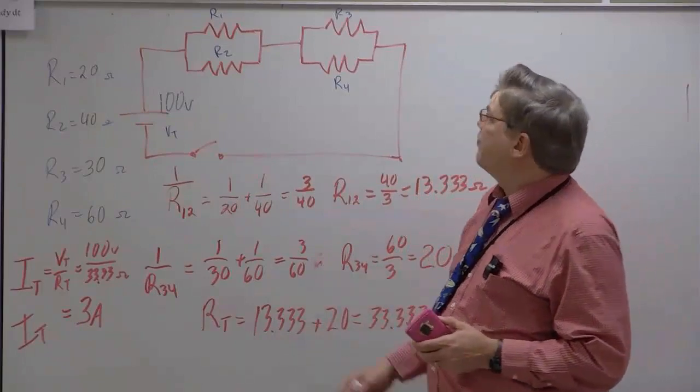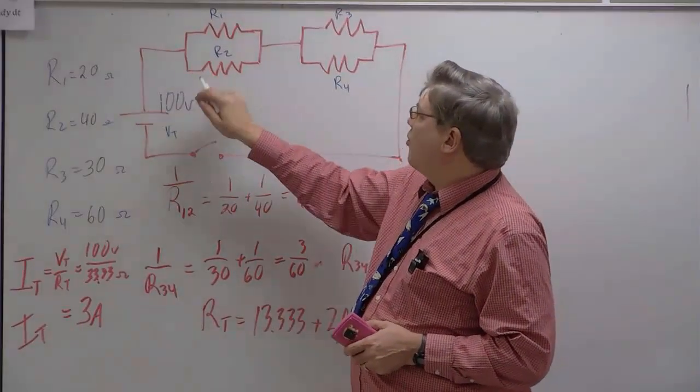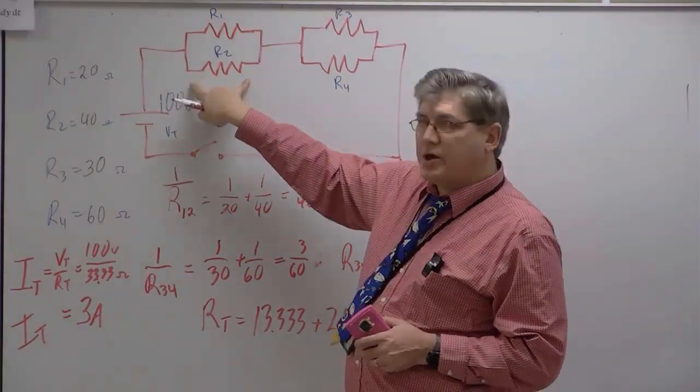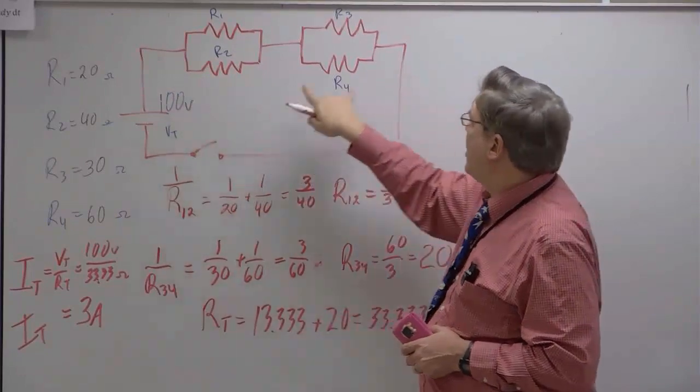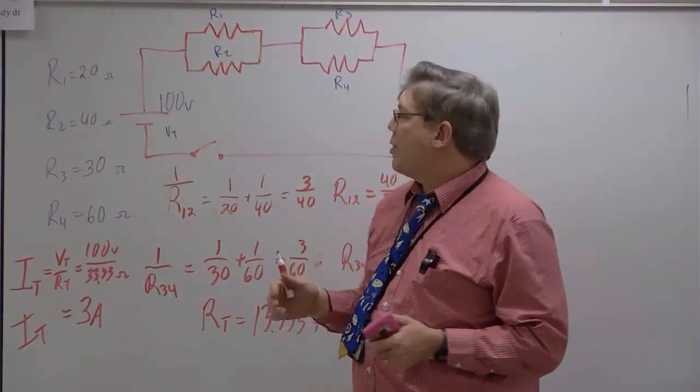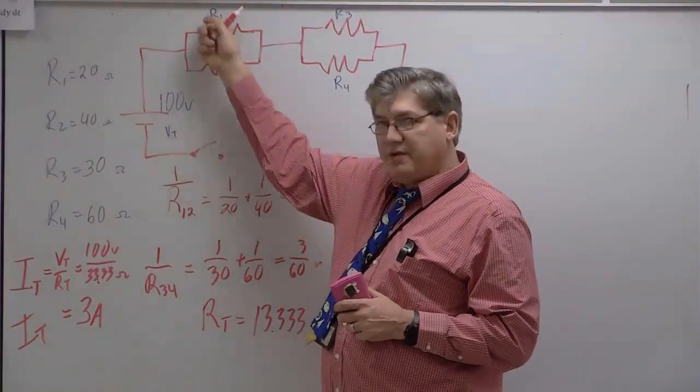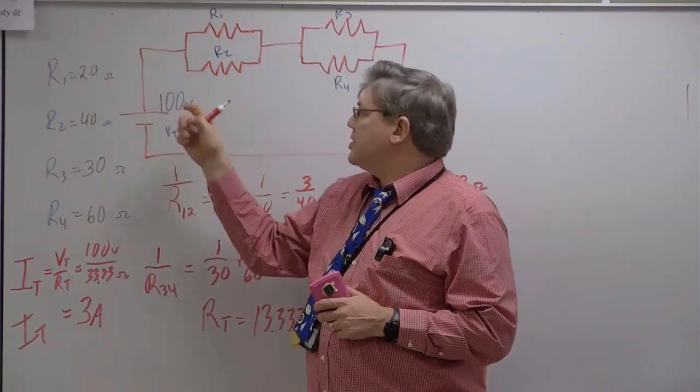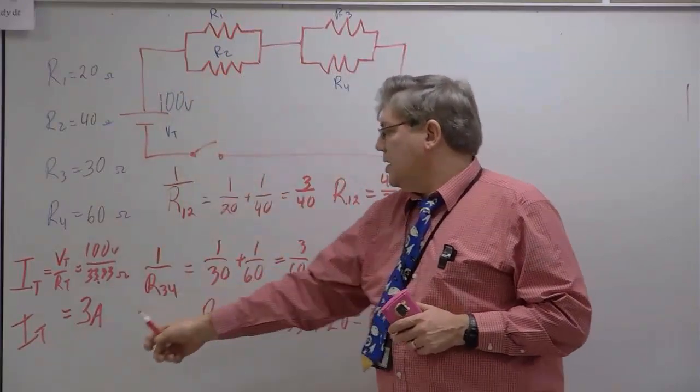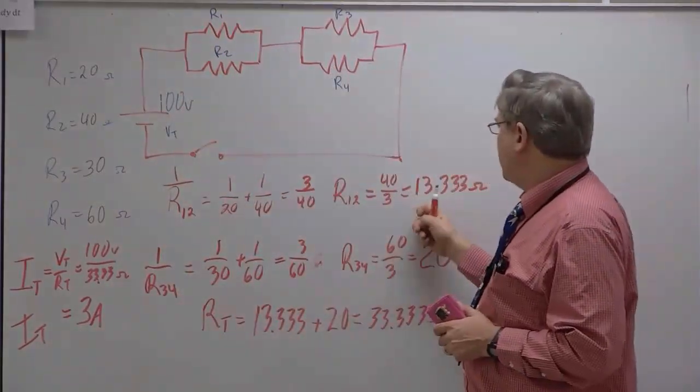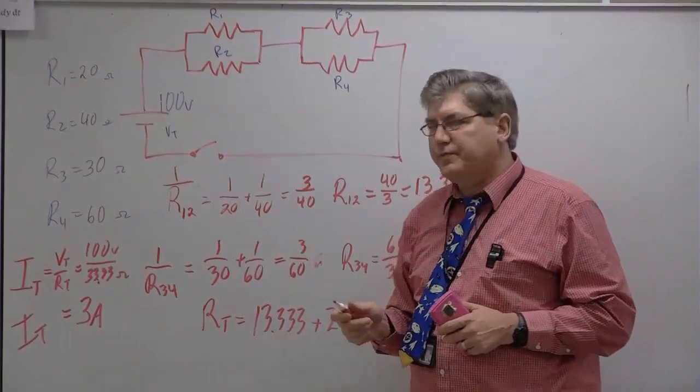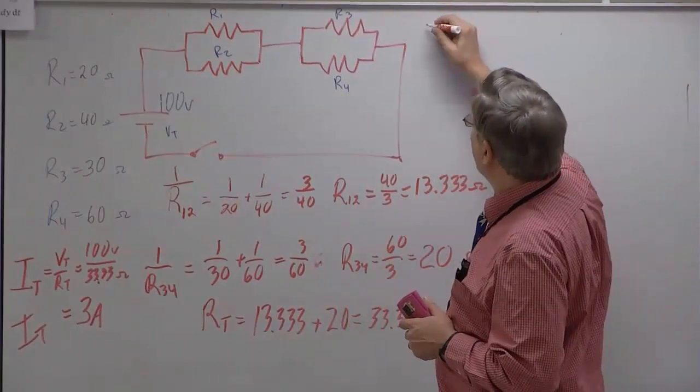Now knowing that, I can solve for the voltage drop across the first resistor pair and the second resistor pair. Remember, I'm going to treat them as if they're a single resistor that has the resistance of this parallel circuit. So since I know the IT and the resistance for each one, I can solve for the voltage.